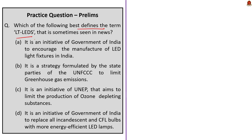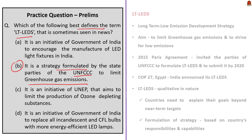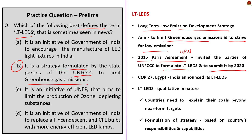The next question asks which best defines LT-LEDS, sometimes seen in news. The correct answer is option B — it is a strategy formulated by state parties of the UNFCCC to limit greenhouse gas emissions. LT-LEDS stands for Long-Term Low Emission Development Strategy. It is a long-term strategy aiming to limit greenhouse gas emissions and strive for low emissions. It was initiated in 2015 at COP21 of the UNFCCC in Paris. The 2015 Paris Agreement invited parties to formulate long-term low emission development strategies and submit them by 2020. Many countries submitted by 2020, but due to COVID-19, some countries including India could not. The deadline was extended, and India announced its LT-LEDS at COP27 in Egypt in November.